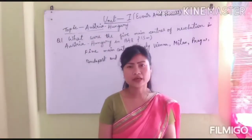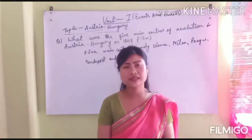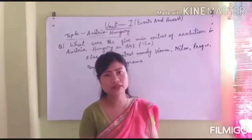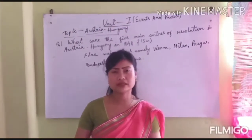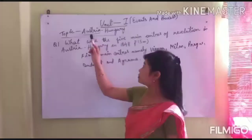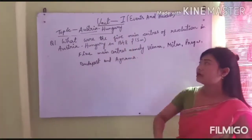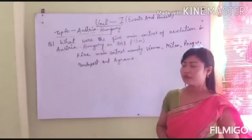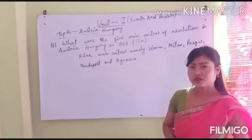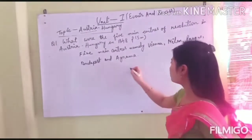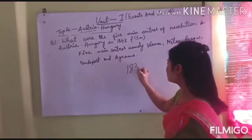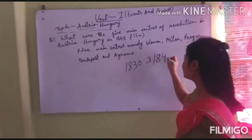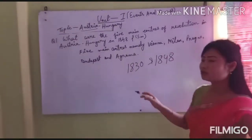My dear students, today I am going to teach you the subject history of class 10. The topic comes from Unit 1, Events and Processes, and the topic is Austria-Hungary. I am going to remind you of the revolutions of 1830 and the February Revolution of 1848.